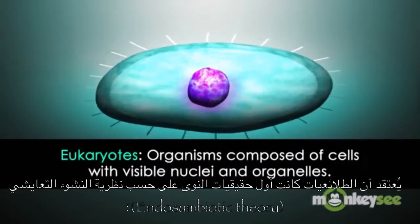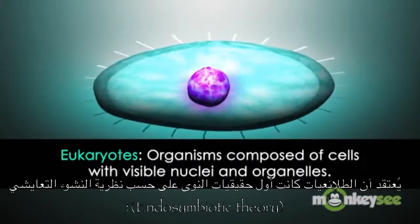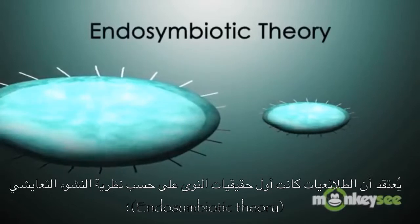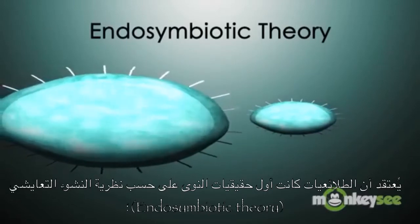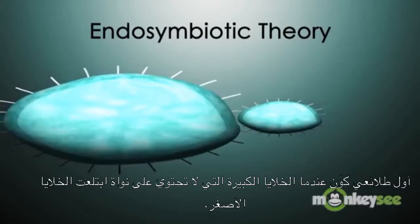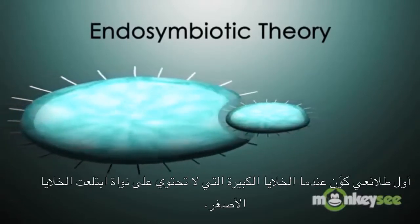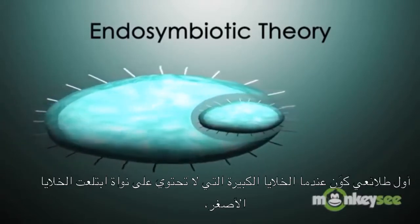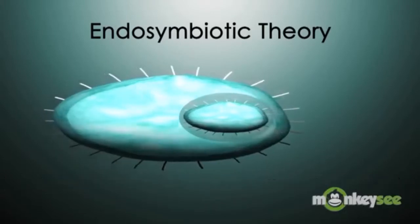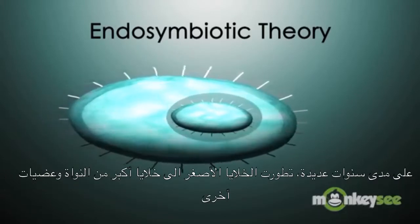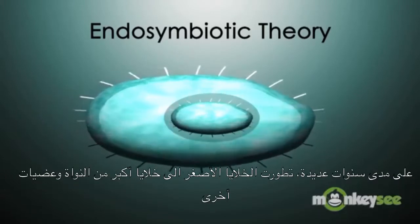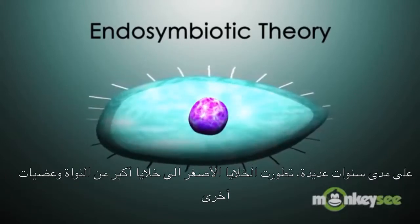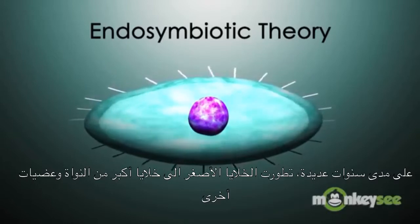Protists were probably the first eukaryotes, according to what's called endosymbiotic theory. The first protists formed when cells that did not have a nucleus engulfed smaller cells. Over many years, these smaller cells evolved into the larger cells' nucleus and other organelles.